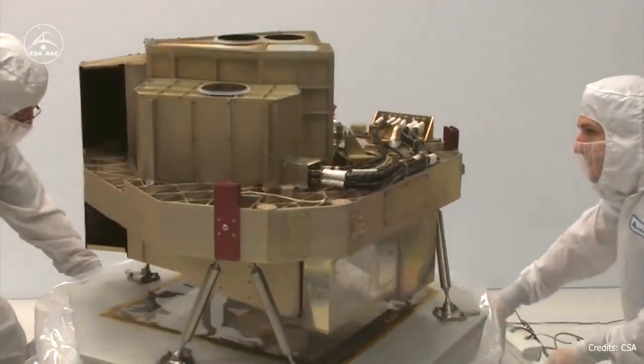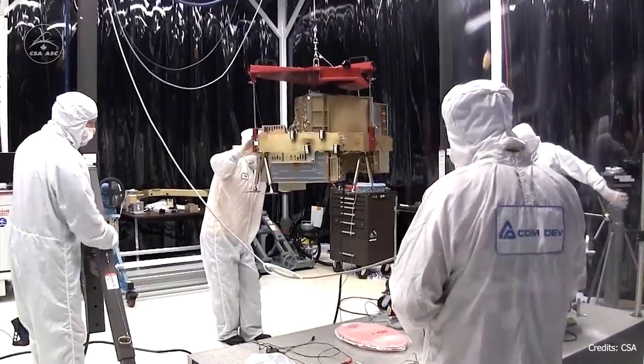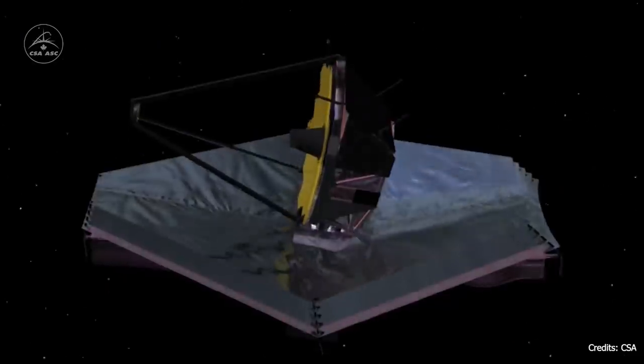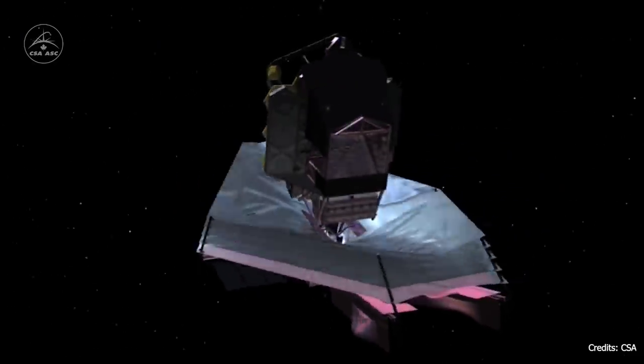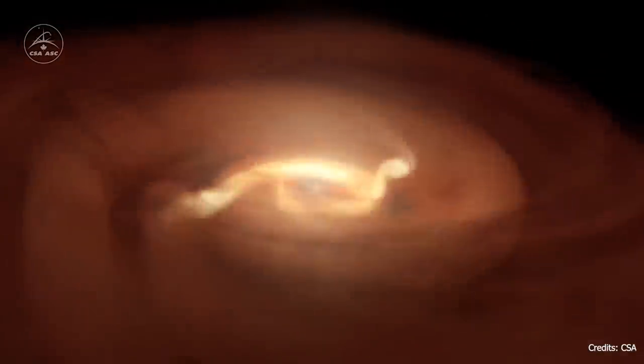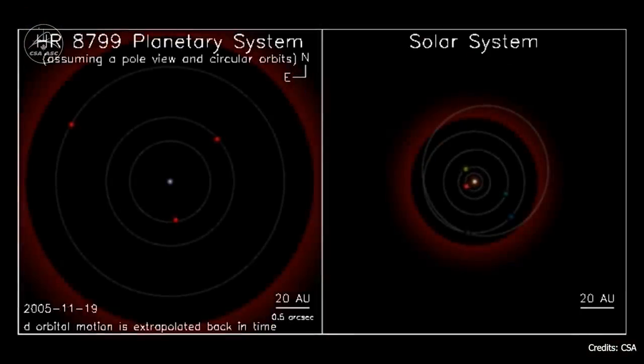The fourth instrument is two instruments in one, the Fine Guidance Sensor, or FGS, and the near-infrared imager and slitless spectrograph, or NIRISS. FGS is a guider which will help point the telescope. NIRISS will detect and characterize exoplanets and perform exoplanet transit spectroscopy.